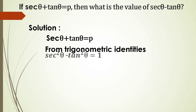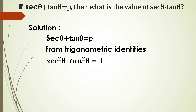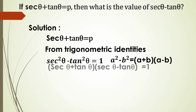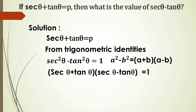From trigonometric identities, sec²θ - tan²θ = 1. This is like a² - b² = (a + b)(a - b), so (sec θ + tan θ)(sec θ - tan θ) = 1. In the problem, sec θ + tan θ = p.